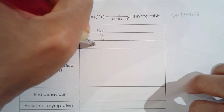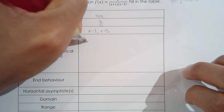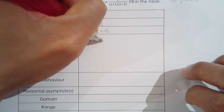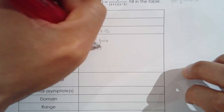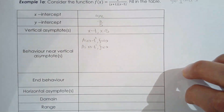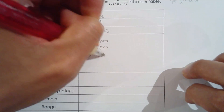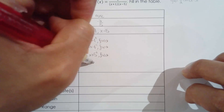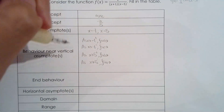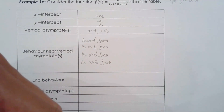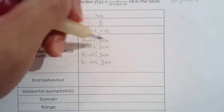Vertical asymptotes: you have two of them — x equals negative one and x equals five. As x approaches negative one from the right, the denominator will be negative, so f of x approaches negative infinity. And on the other side, positive infinity. I'm actually going to do the graph first, and then come back to fill in these cells, since having the picture makes it easier to answer all the questions.